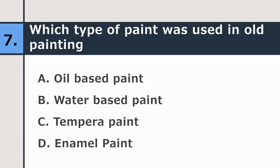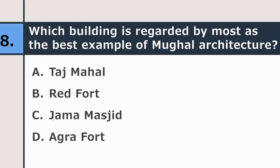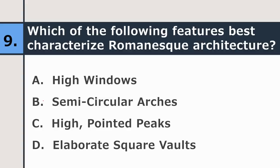Seventh question: which type of paint was used in old paintings — oil-based paint, water-based paint, tempera paint, or enamel paint? The correct answer is tempera paint. Eighth question: which building is regarded by most as the best example of Mughal architecture — Taj Mahal, Red Fort, Jama Masjid, or Agra Fort? The correct answer is Taj Mahal.